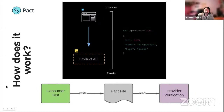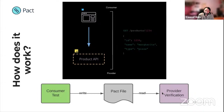In its most simple form, a consumer test is performed in a unit testing framework utilising the PAC framework. When an interaction has been successful, that'll be written to a PAC file. That PAC file will be shared at some point later with a provider. The provider will read the contents from the PAC file, and those will be replayed against the provider. The provider returns a response, and the PAC framework will assert the response of the provider versus the expectations in the PAC file, then return a result.